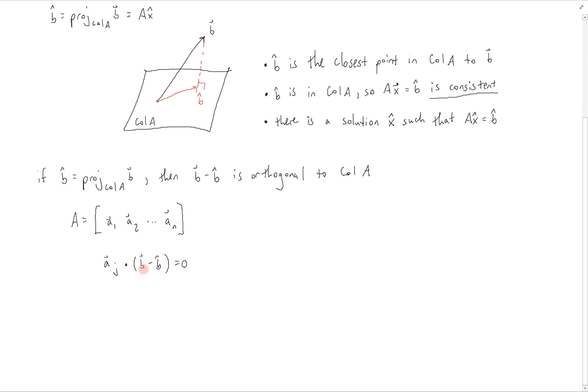b minus b hat can be rewritten as b minus ax hat, since we know that b hat is equal to ax hat. So this can be written as a sub j dot b minus ax hat is equal to 0. And this is the same thing as taking the jth column transpose and multiplying it by b minus ax hat. And that is equal to 0.